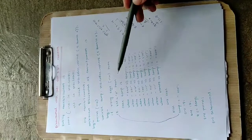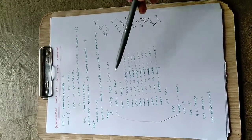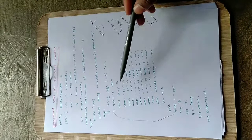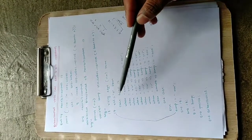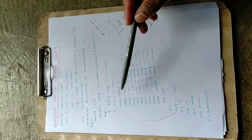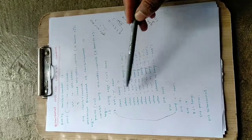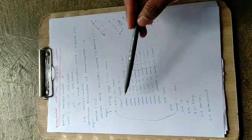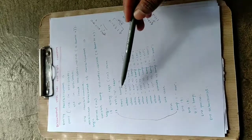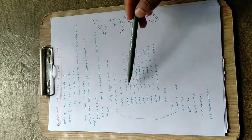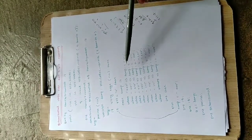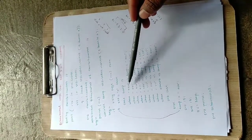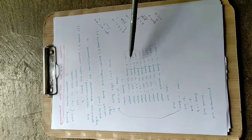Assuming reset is 0, the case statement starts: 'case temp is'. When the case value, that is the temp value, is 000, then temp will be assigned 001 — so if the present state is 000, it will go to 001.